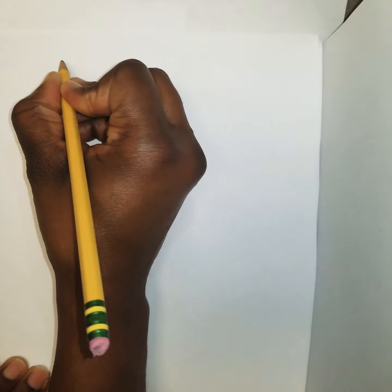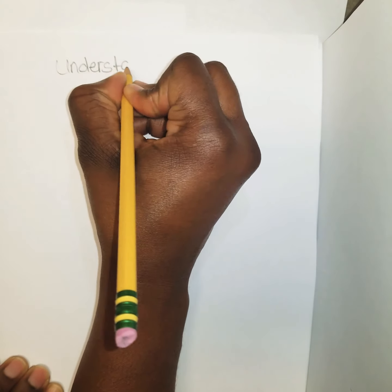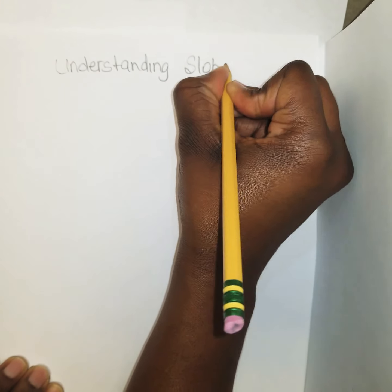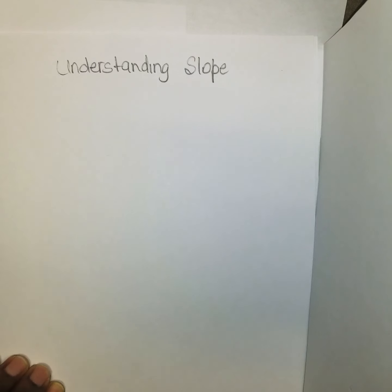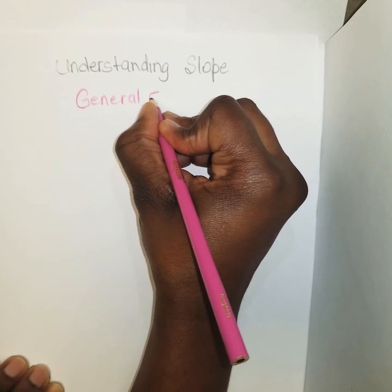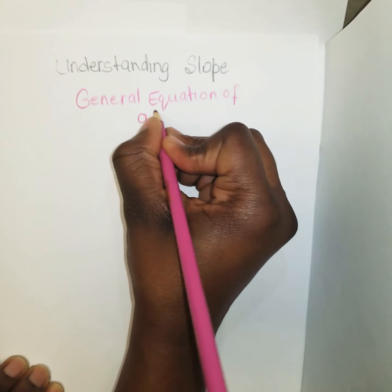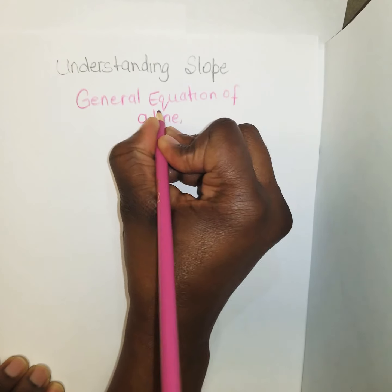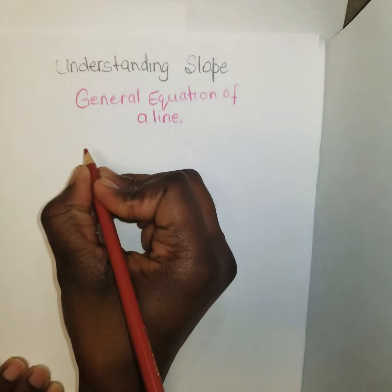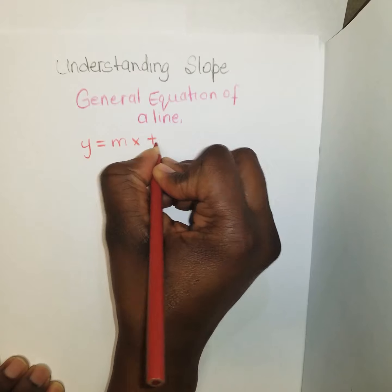So we need to understand it. It's about understanding slope and how we get to the general equation of a line. The equation is y = mx + b.